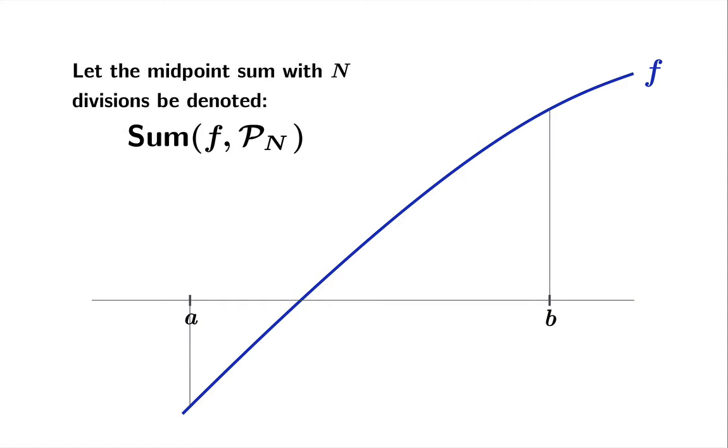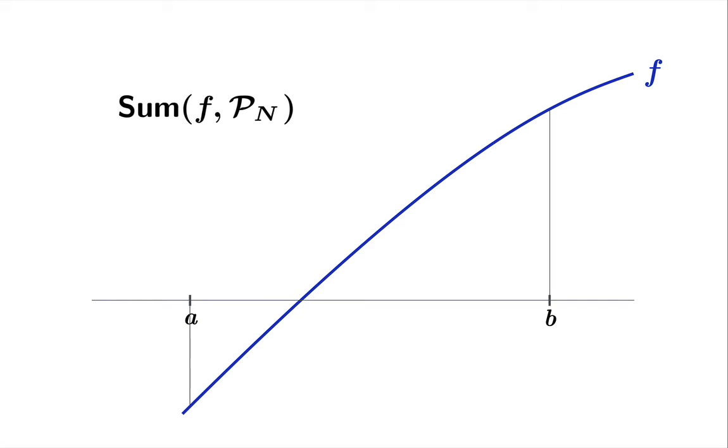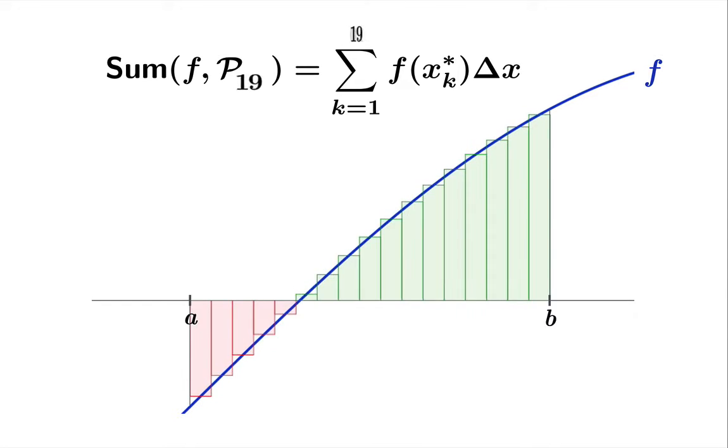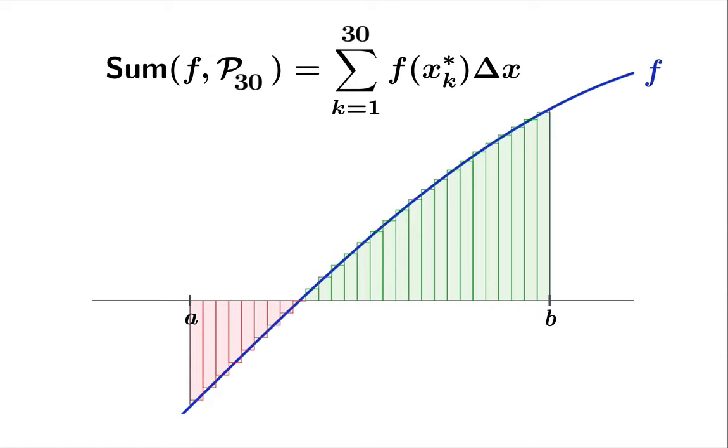Now that's a mouthful. What we really just mean to say is that P_N is going to be the midpoint partition and then the sum of f with respect to P_N is just going to be the midpoint sum. So if we took a look at this, here's one division, which doesn't look so impressive, but then we're going to let the number of divisions increase and we'll go all the way up to 30 divisions.